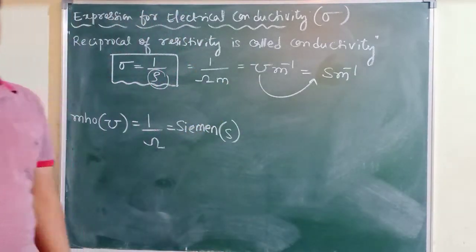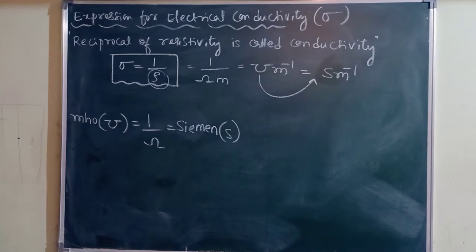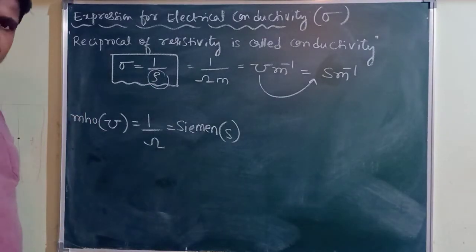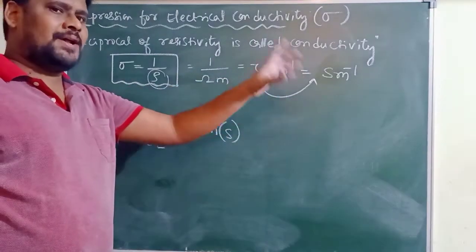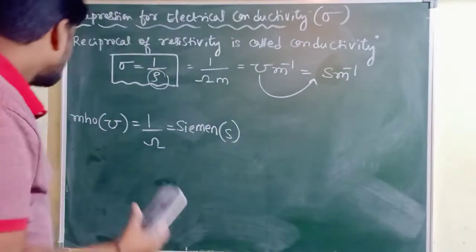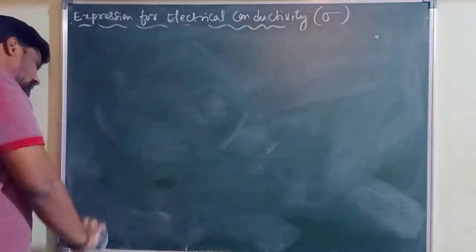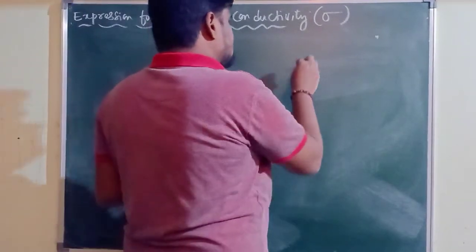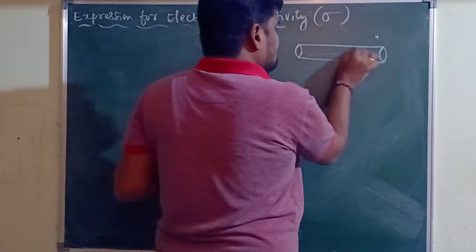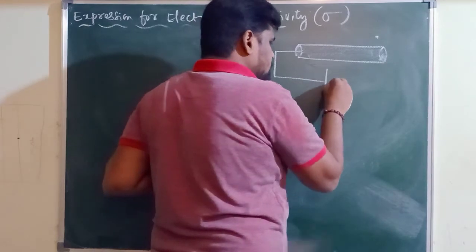To summarize: the definition of conductivity is reciprocal of resistivity, and its SI unit is mho per meter or siemens per meter. Now let us derive an expression for electrical conductivity. For that, let me consider a conductor of certain length L. Consider a conducting wire of length L; across this conductor a potential difference V is applied. As a result, current will start flowing through the conductor.